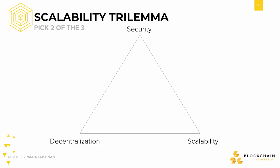Instead of attempting to solve scalability while keeping both security and decentralization, some blockchains have sacrificed the decentralized property in order to allow for scalability. In blockchains such as enterprise blockchains, they oftentimes have less of a need for decentralization, as their use cases are usually limited to very specific users. Thus, these blockchains still follow the scalability trilemma and exchange decentralization for scalability and security.